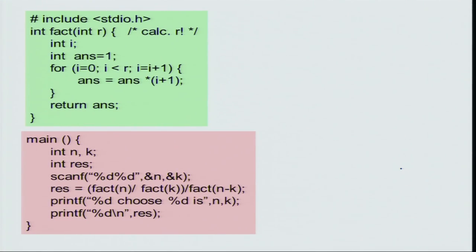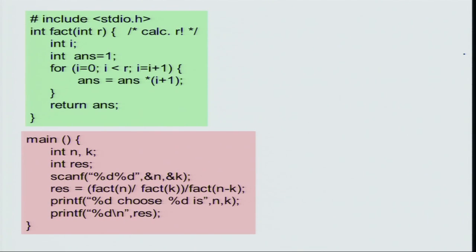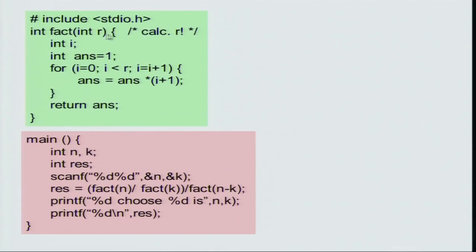Let us look at the function we were talking about earlier. n choose k is n factorial divided by k factorial times n minus k factorial. Let us try to code this up. We know that factorial is something we will need over and over in this program, so let us write factorial as a function. Factorial takes an integer and returns an integer, so the declaration is: int fact(int r). r is the input argument and the return type is int.